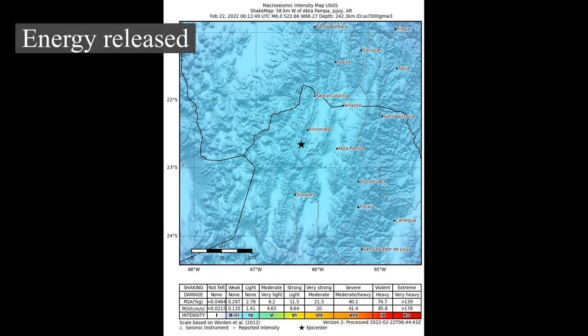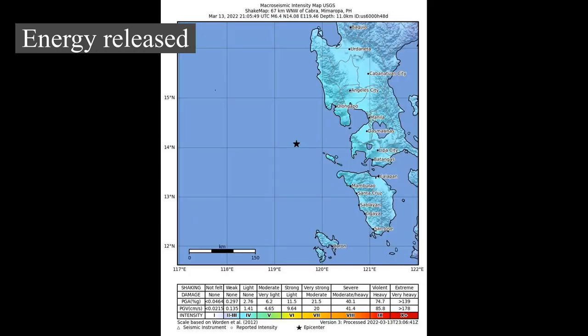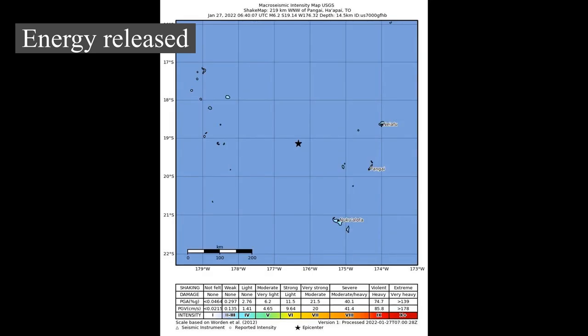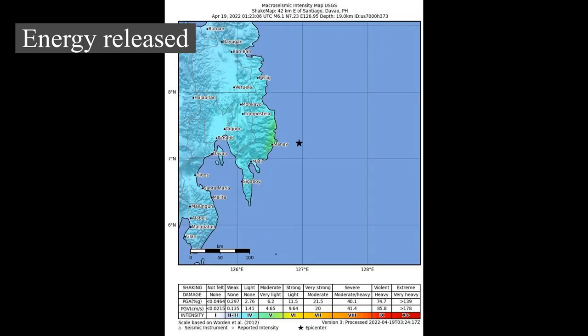Energy released: For every unit increase in magnitude, there is a roughly 32-fold increase in the energy released. An earthquake of magnitude 6.0 releases approximately 32 times more energy than a magnitude 5.0 earthquake, and a magnitude 7.0 releases 1,000 times more energy. An 8.6 magnitude earthquake releases the same amount of energy as 10,000 atomic bombs of the size used in World War II. The energy released, and thus the magnitude, is proportional to the area of the fault that ruptures and the stress drop — the longer and wider the faulted area, the larger the resulting magnitude.